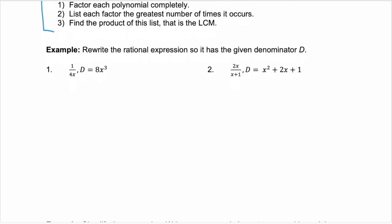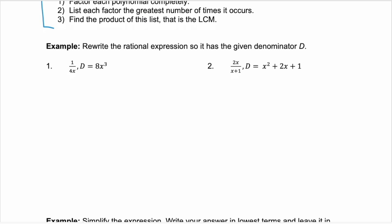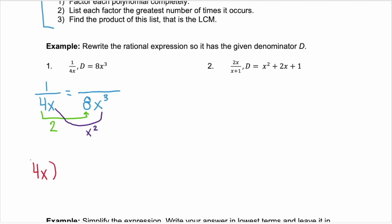Our first two examples give us the least common multiple — they're telling us to rewrite these rational expressions so that it has a given denominator. This first example tells us: if we have the rational expression 1 over 4x, rewrite it so that we have a denominator of 8x cubed. To do that, we need to determine what we had to multiply that first rational expression by to go from 4x to 8x cubed. To go from 4 to 8, we had to multiply by 2, and to go from x to x cubed, we multiply by x squared. So multiplying 4x by 2x squared gives us 8x cubed.